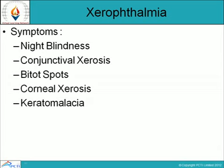Conjunctival xerosis — xerosis is a Greek word meaning dryness. Conjunctival xerosis therefore means dryness of the conjunctiva, which is the transparent membrane that covers the cornea and lines the inside of the eyelid. When it becomes dry, this is also a symptom of Xerophthalmia.